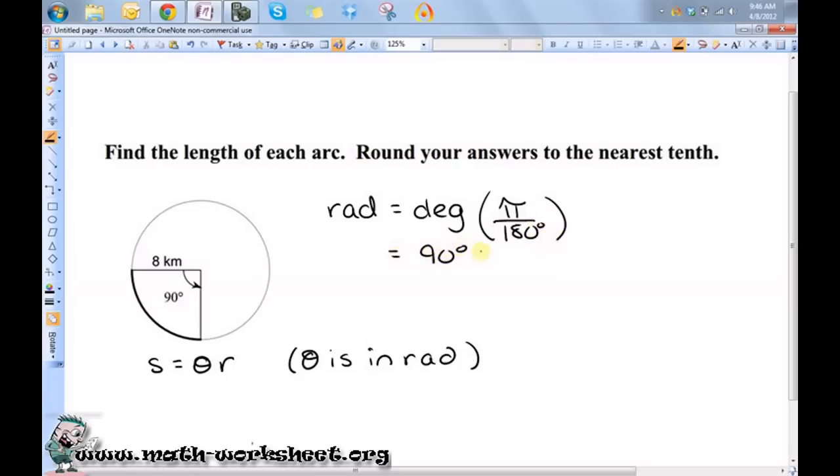So it's 90 degrees times pi over 180 degrees, so it's pi over 2.